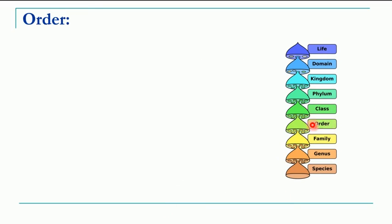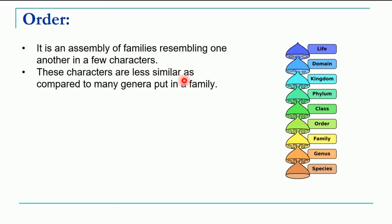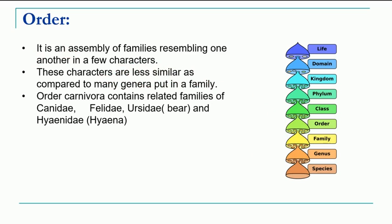The next higher category is order. Related families come together to give rise to an order — it is an assembly of families resembling one another in a few characters. These characters are less similar compared to the genera within a family, meaning in a family the number of similarities are more, compared to the order level where similarities go on decreasing. For example, order Carnivora contains the related families Canidae, Felidae, Ursidae, and Hyaenidae — representing canine, cat, bear, and hyena members respectively.